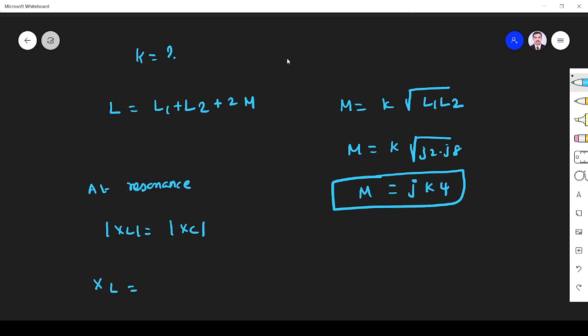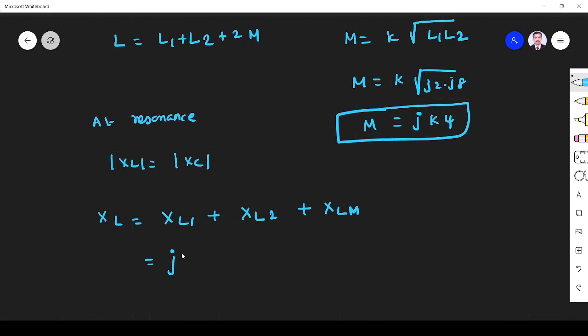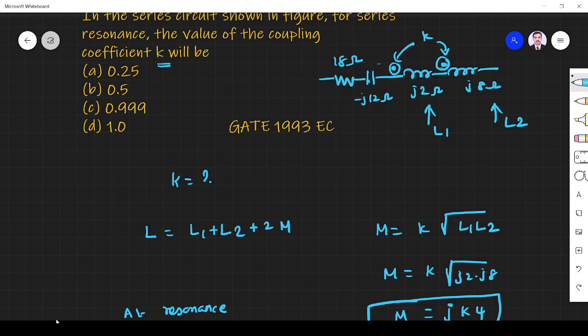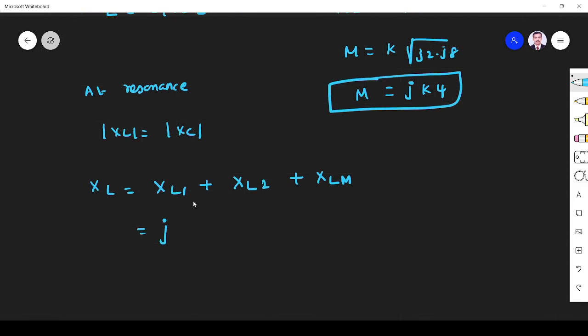XL is the total inductive reactance from three inductances. The inductive reactance is XL = jωL. We have j2 from L1, j8 from L2, and jk4 from mutual inductance.